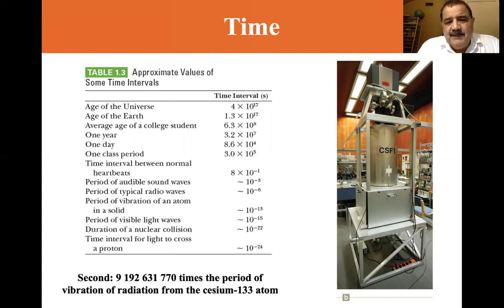The time interval between normal heartbeats, 8 times 10^-1, so 0.8 seconds. Period of vibration of an atom in a solid is 10^-13 seconds. The time interval for light to cross a proton is 10^-24 seconds.